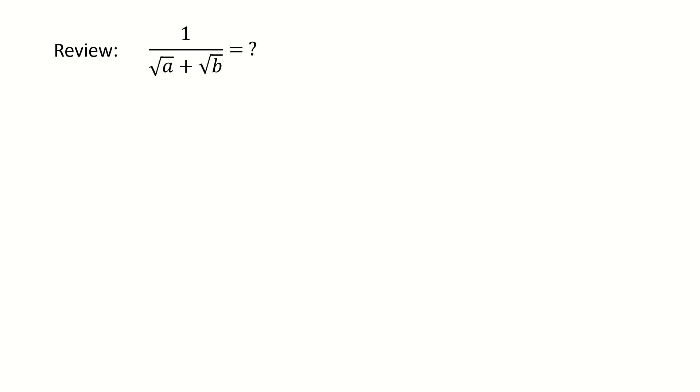First, let's give a quick review here. To rationalize the denominator, it means to get rid of all radical roots for the denominator. Here we can see an example. We have the square root a and the square root b in the denominator, and we try to remove those square root terms in the denominator.